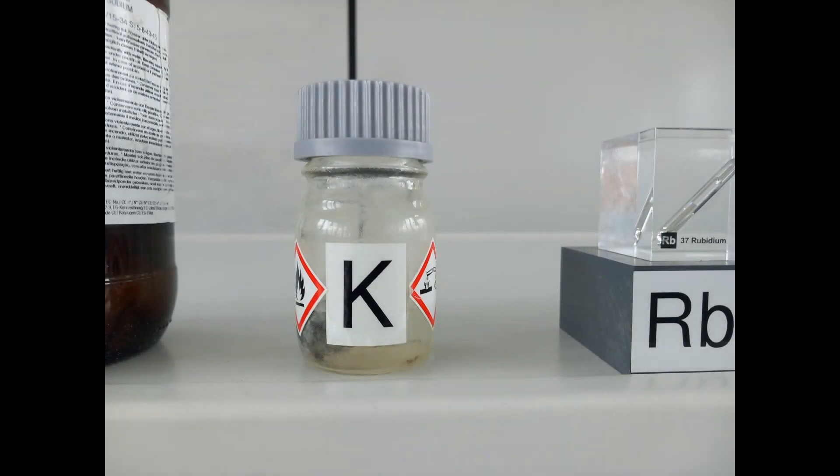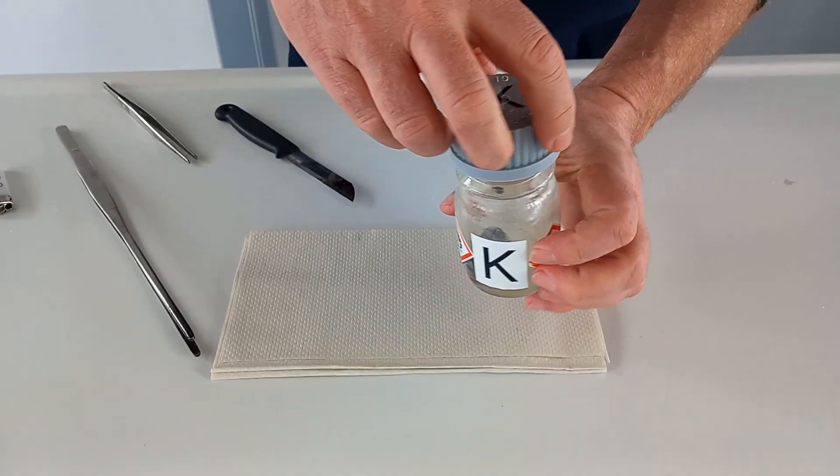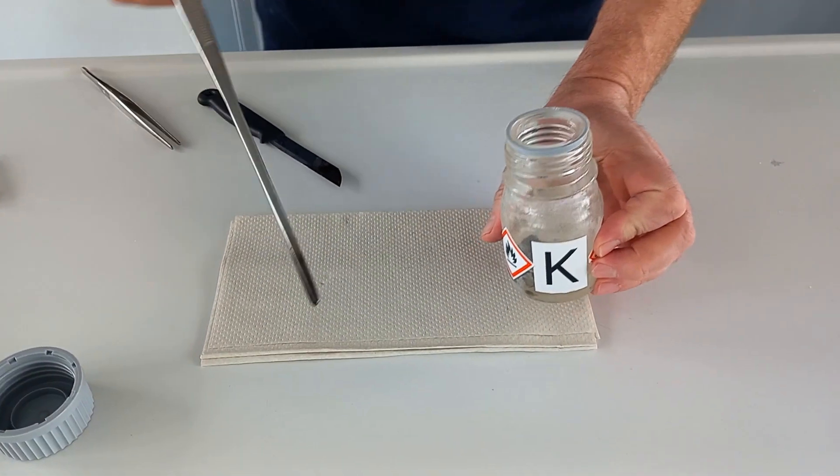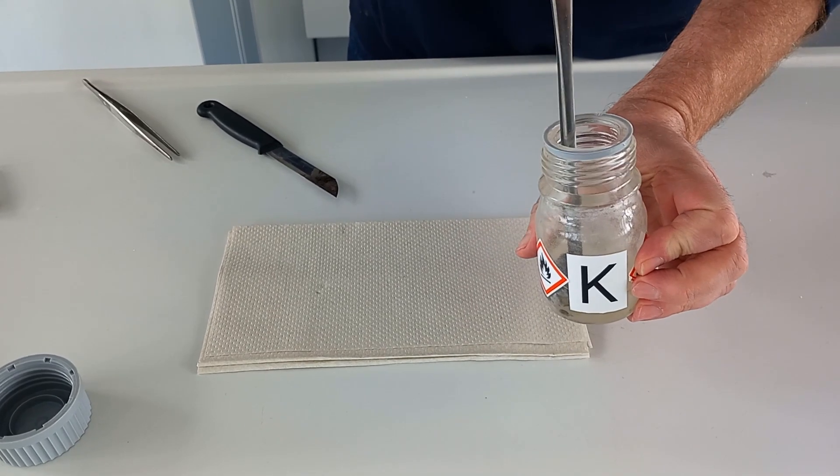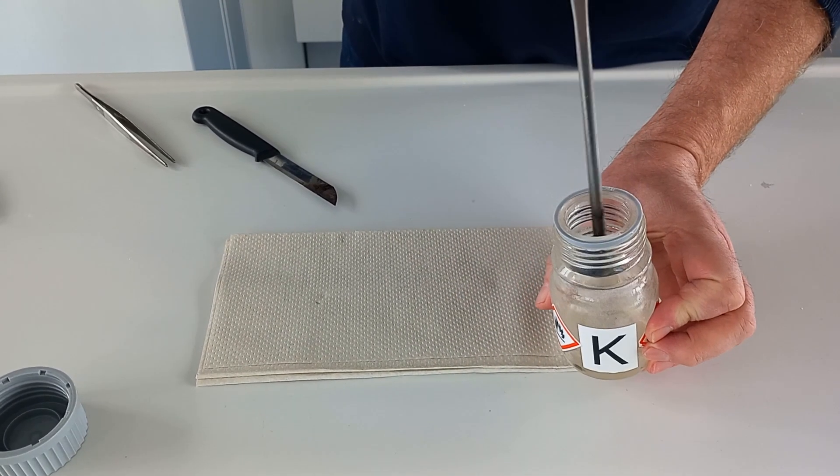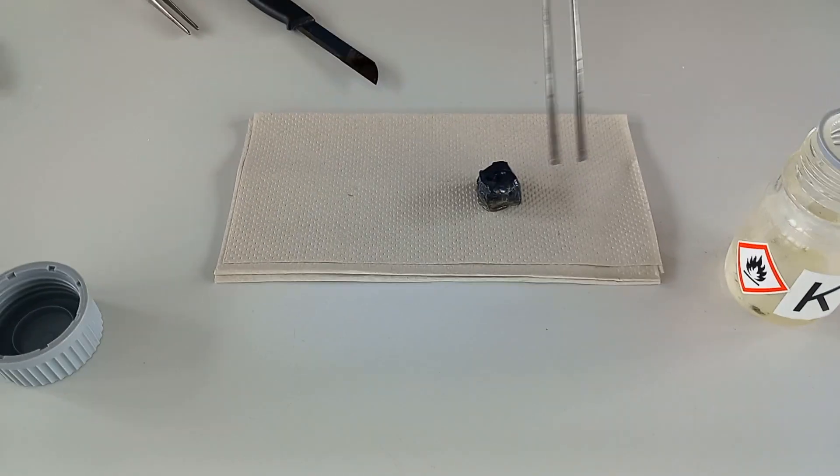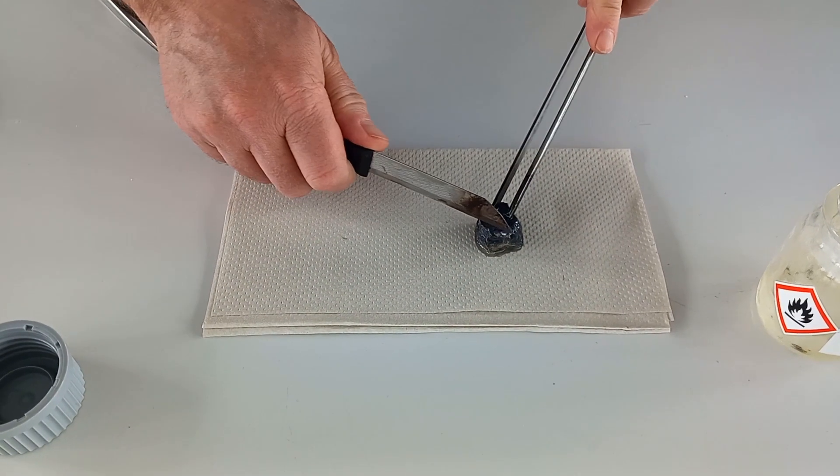The next alkali metal is potassium. Potassium is softer than the other two metals, so it can also be cut with the knife.